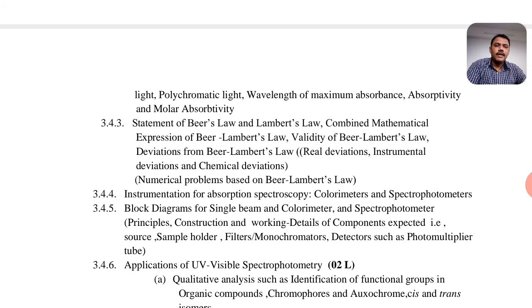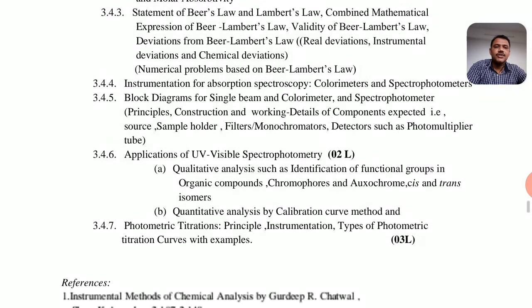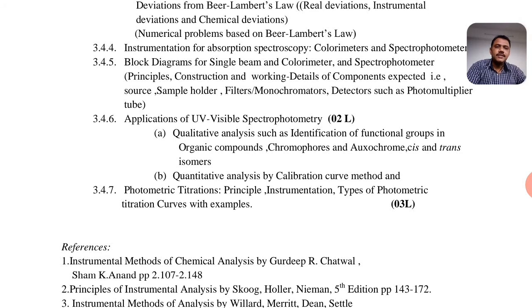Instrumentation for absorption spectroscopy includes colorimeters and spectrophotometers. We will learn about the block diagram for a single-beam colorimeter and spectrophotometer. The last topic is the application of UV-visible spectroscopy in various applications, including quantitative analysis, identification of functional groups in organic compounds, chromophores, auxochromes, and cis and trans isomers. Also covered are photometric titrations, their principle and instrumentation, types of photometric titrations, titration curves with examples.